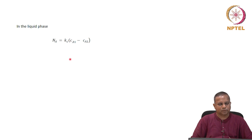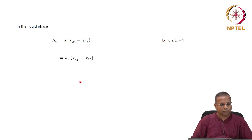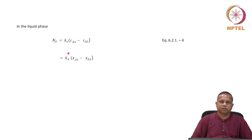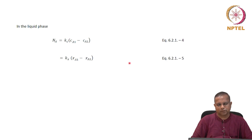This has been written in terms of concentrations, but we can write them in terms of mole fractions also. It becomes easier many times to work in terms of mole fractions. So we write this as kx — the transfer coefficient based on mole fraction — times the mole fraction at 1 minus the mole fraction at 2. Equation 6.2.1-5.